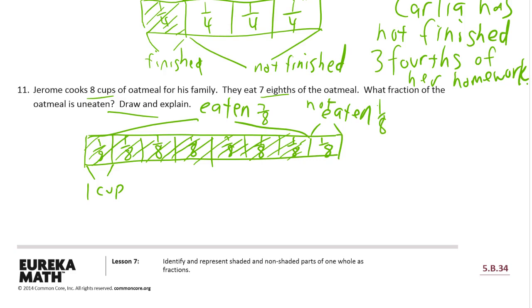And I have to answer the question. One-eighth of—it's not one-eighth of a cup, it's one-eighth of the oatmeal. One-eighth is uneaten. Now, you could answer this that one cup of the oatmeal is uneaten. But the question asks what fraction of the oatmeal is uneaten. So you have to give an answer as a fraction, and that would be one-eighth.